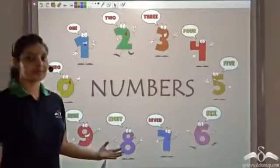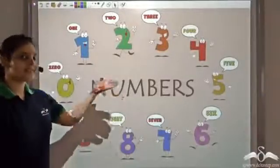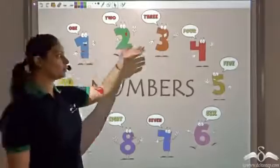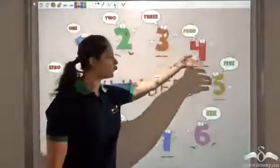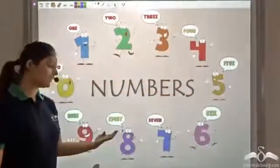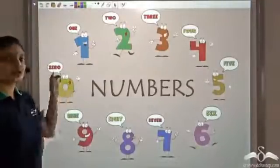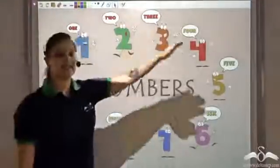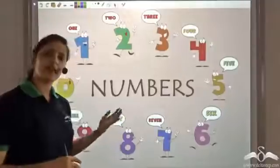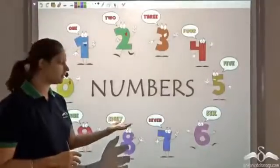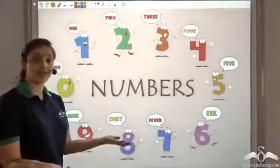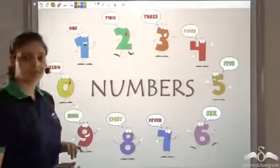Our modern number system uses these 10 digits: 1, 2, 3, 4, 5, 6, 7, 8, 9, and 0. So these are the 10 digits that are used. Now the question is, why only 10? Why not 11? Why not 12? Why not just 9? Why were these 10 digits used?